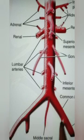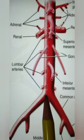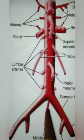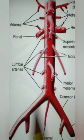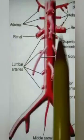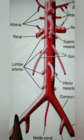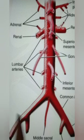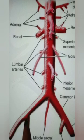At the level of L4, the abdominal aorta divides into the two common iliac arteries. On each side, the artery passes downward and laterally and ends in front of the sacroiliac joint, which is the meeting point of the sacrum and ilium. At the level of the lumbosacral intervertebral disc, each common iliac artery divides into the external iliac and internal iliac arteries.